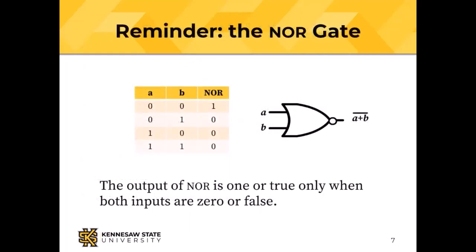A reminder: the NOR gate has the OR symbol with a negation bubble at the output. It computes NOT (A OR B). The output of a NOR gate is one — true or on — only when both A and B inputs are zero, off, or false.